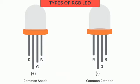Types of RGB LED: there are two types of RGB LED, one is common anode and the second is common cathode.